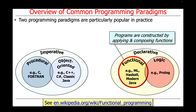There are also the category of languages known as functional languages, where programs are constructed by applying and composing functions. Examples of so-called pure functional programming languages include ML and Haskell.